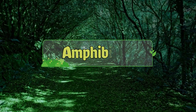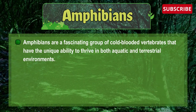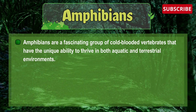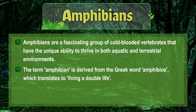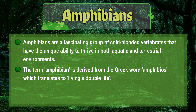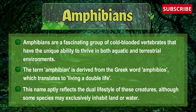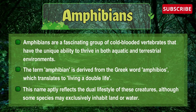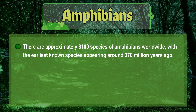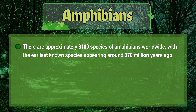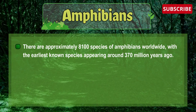Let's dive into understanding Amphibians. Amphibians are a fascinating group of cold-blooded vertebrates that have the unique ability to thrive in both aquatic and terrestrial environments. The term Amphibian is derived from the Greek word amphibios, which translates to 'living a double life.' There are approximately 8,100 species of Amphibians worldwide, with the earliest known species appearing around 370 million years ago.